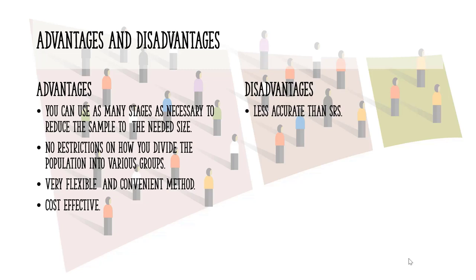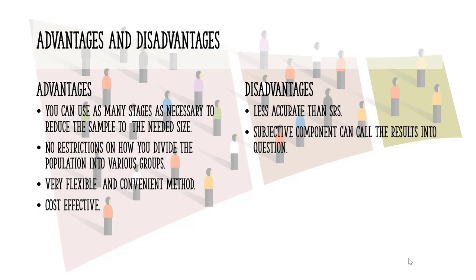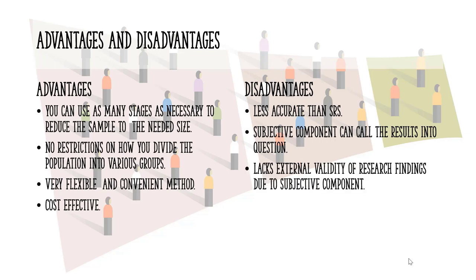One disadvantage is it's less accurate than simple random sampling, and the subjective component — that's where you choose how to divide up the population into states or districts — can call the results into question. Due to this subjective component, the method does suffer from a lack of external validity on your research findings. If you found the video helpful, please take a moment to subscribe, and I'll see you in the next video.